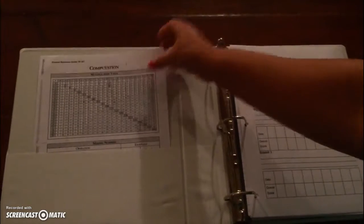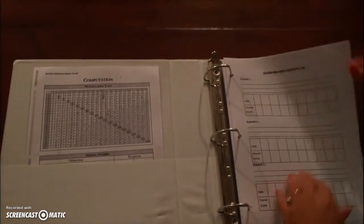Okay, so you have your binder. You are going to put your multiplication table in the front pocket.